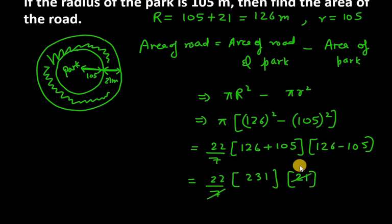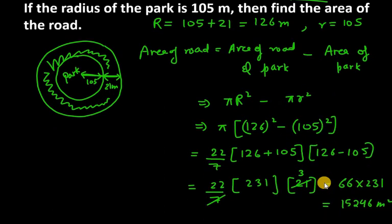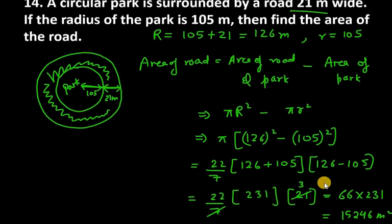Now you can cancel 7 with 21, you will get 3. So now you can multiply 22 into 3, it is 66. And 66 into 231 is equal to 15,246 meter square. So this is the area of the road. This is the answer for question number 14.